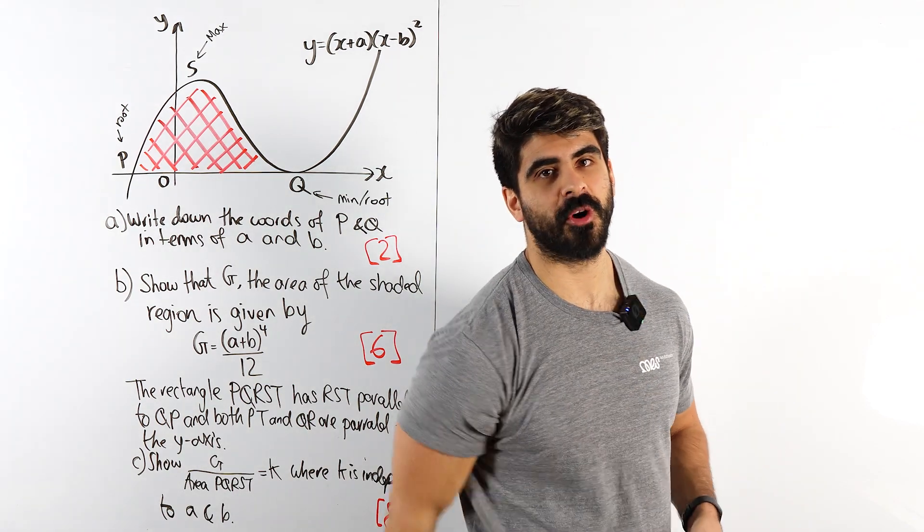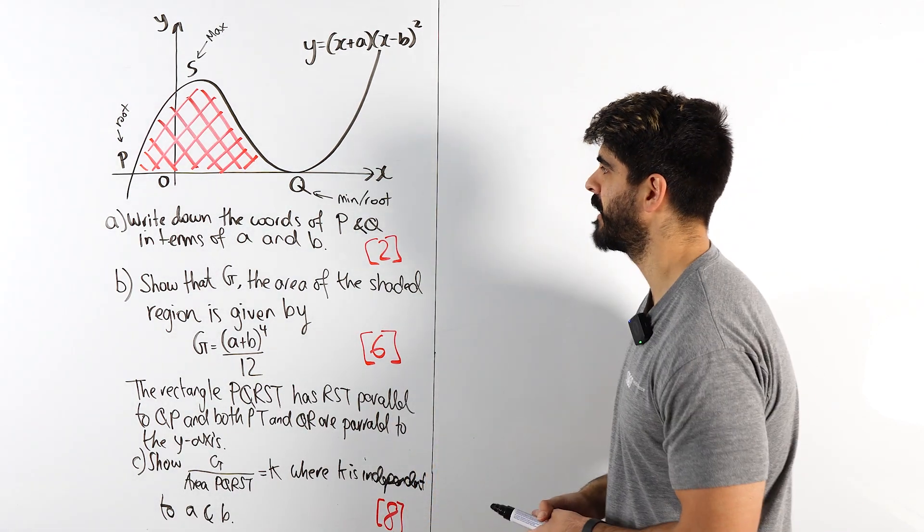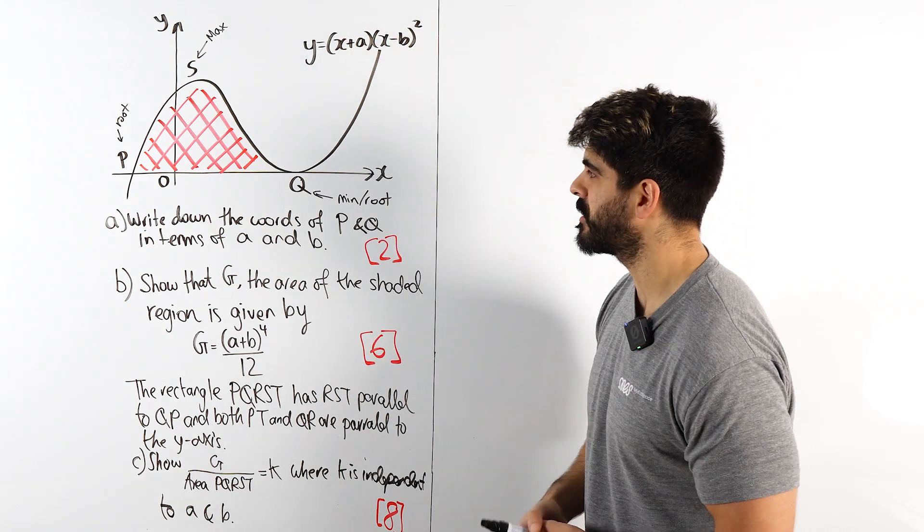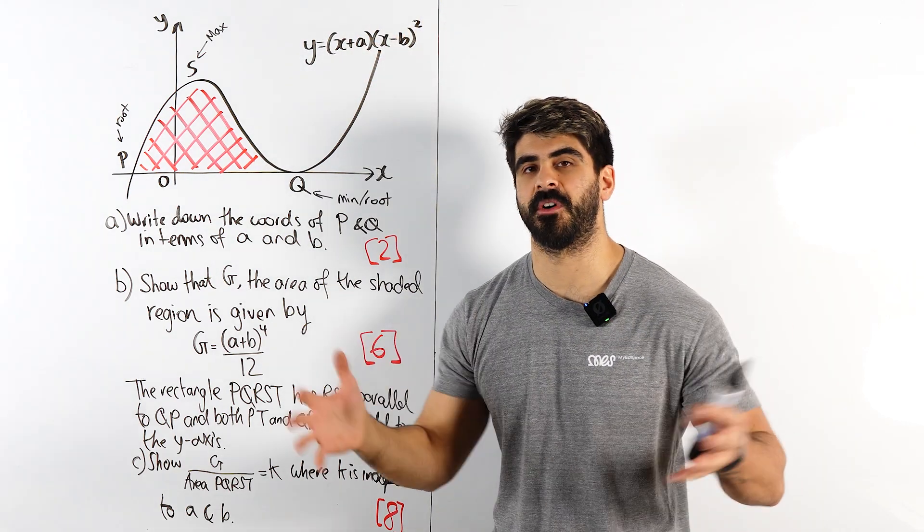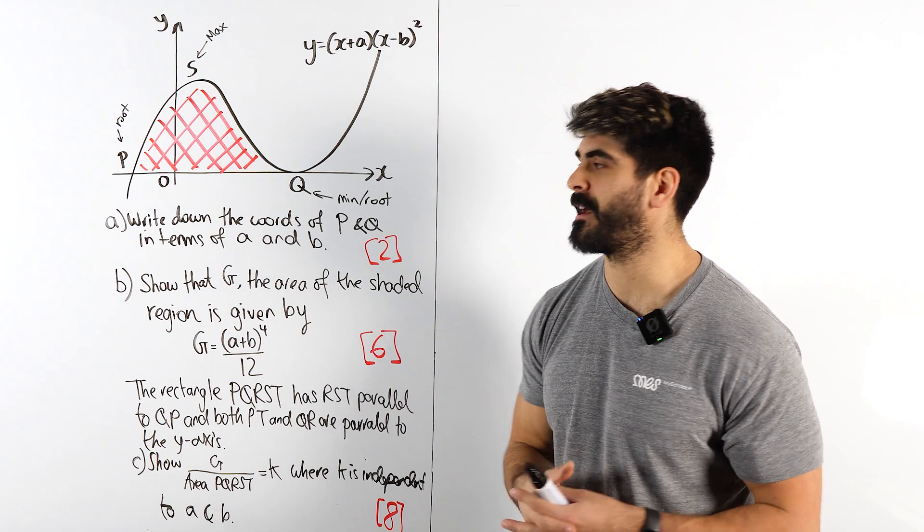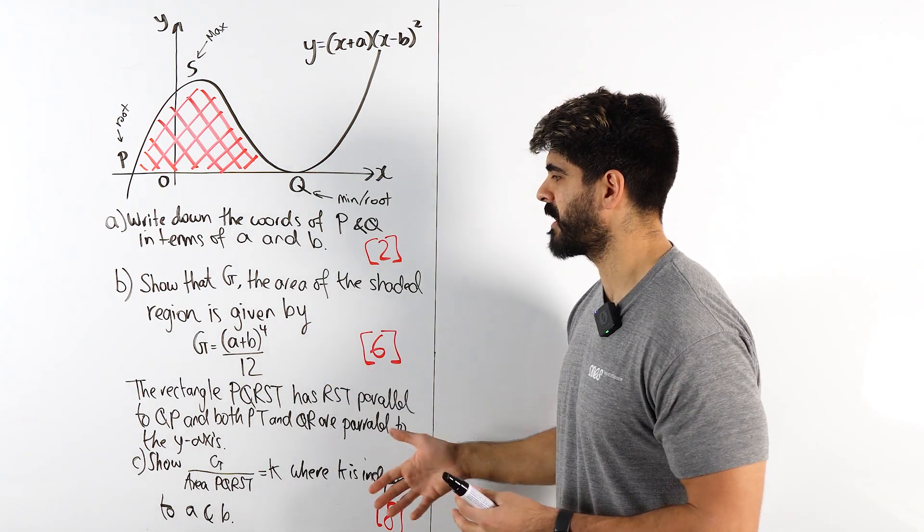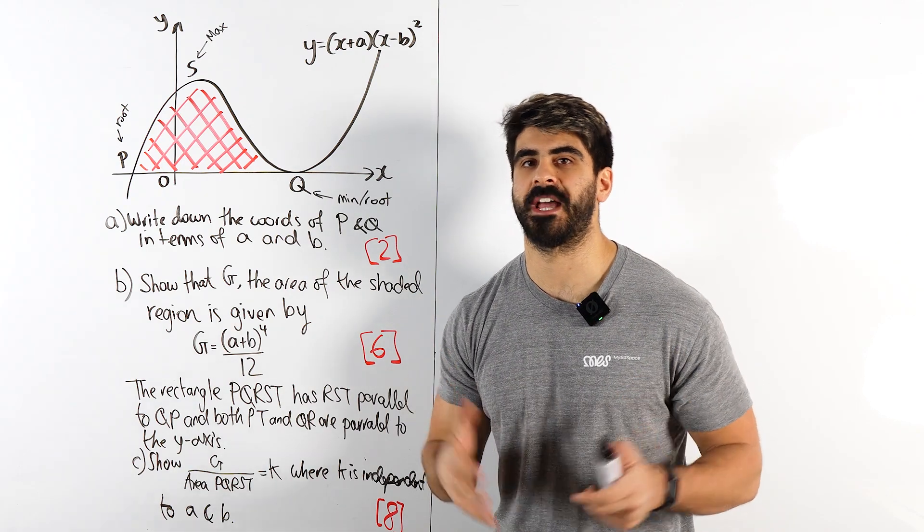If you really want to test how good you are at maths, especially when it comes to A-level maths, you want to be attempting questions like this. This has come from what's called the Advanced Extension Award for A-level Mathematics, which is equivalent to STEP 2 if you get a distinction. This exam is three hours long and it's non-calculator.